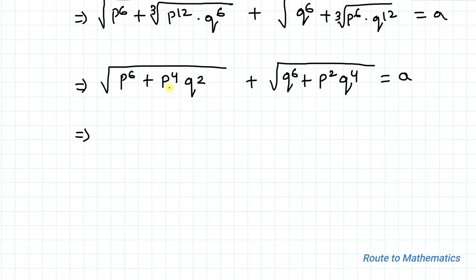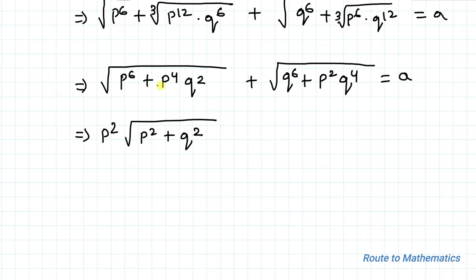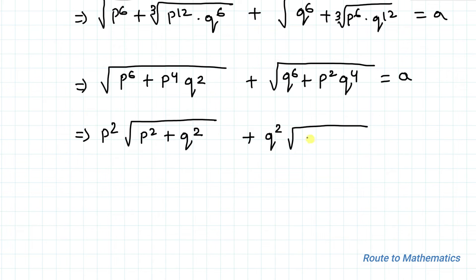Here we have p⁶ + p⁴q², so let's take p⁴ common. The square root of p⁴ is p². Similarly, let's take q⁴ common from the second term. So we get p² · √(p² + q²) + q² · √(q² + p²) = a.